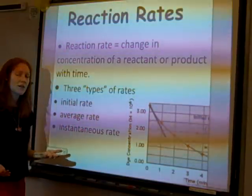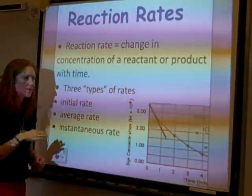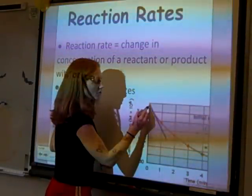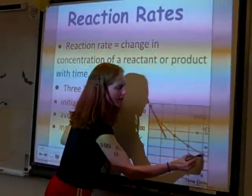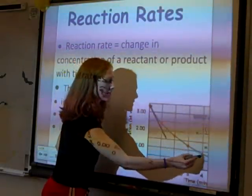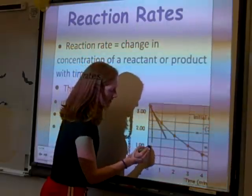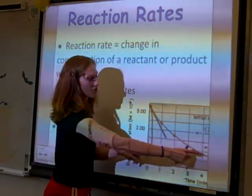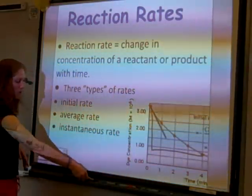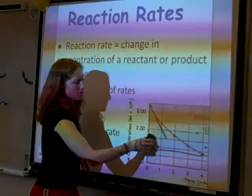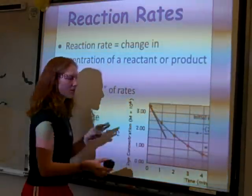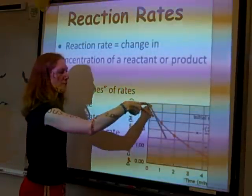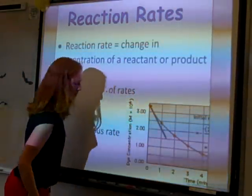Initial rates are convenient because you know the concentration of the reactants you mixed, so they're easy to calculate. The average rate is the change in concentration over the entire reaction — from where you started to where you ended, divided by the total time elapsed. The problem with average rate is that the rate is changing throughout the reaction, so the average doesn't accurately describe how fast it's happening at any particular moment.